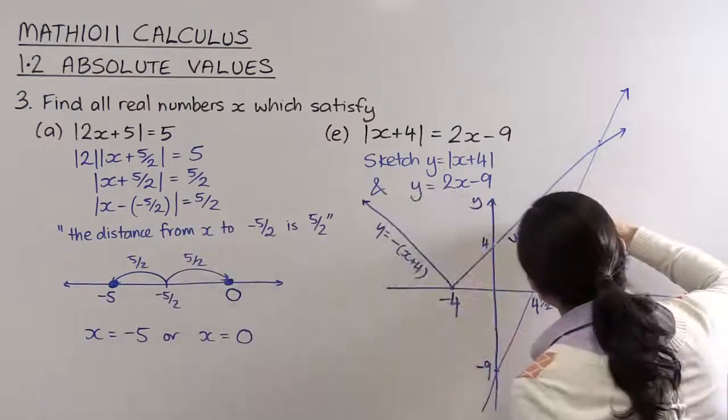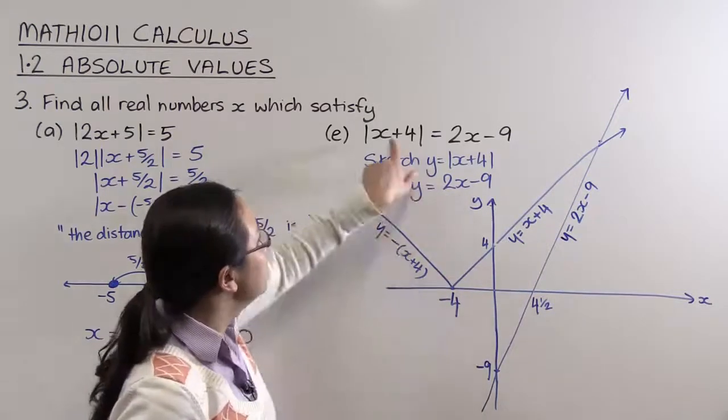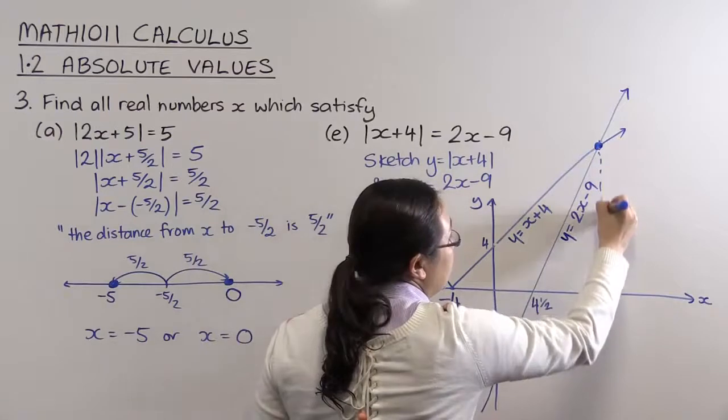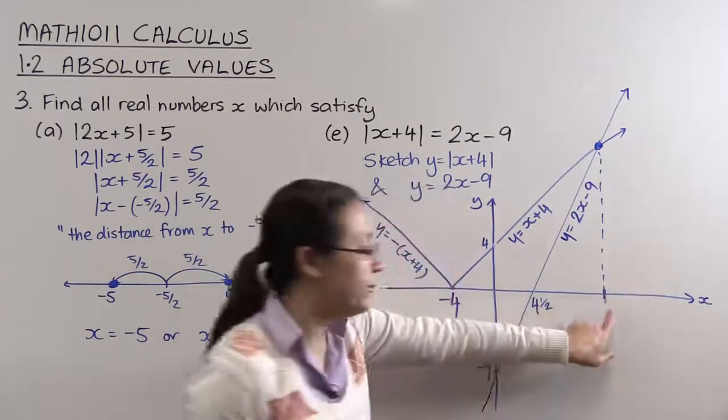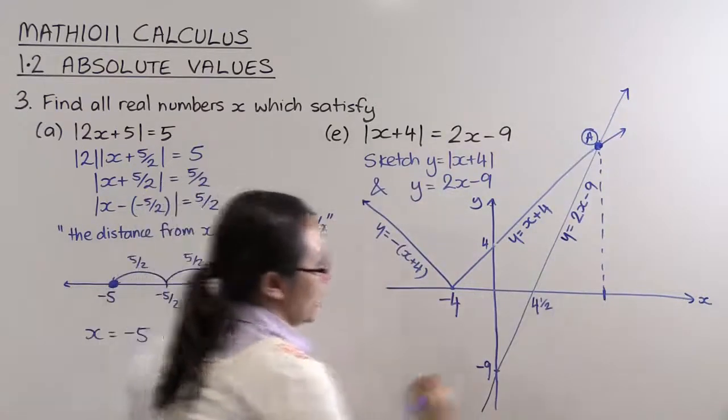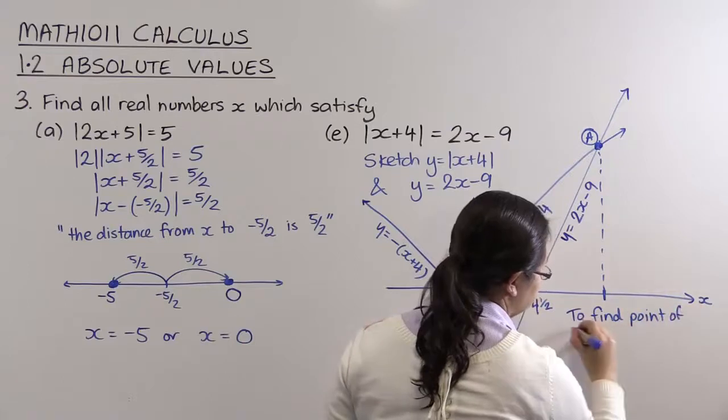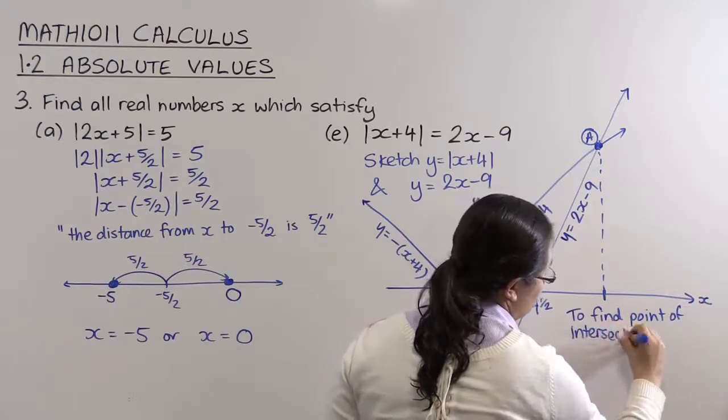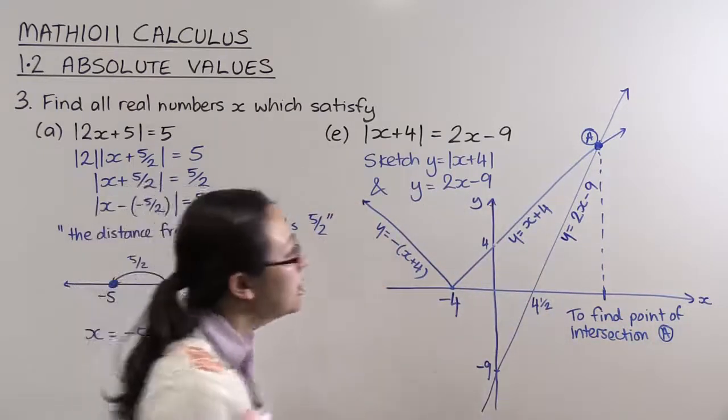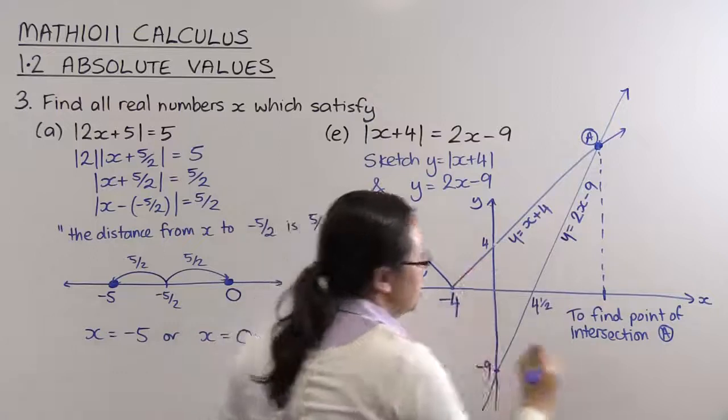So this graph has the equation y equals 2x minus 9. So we can see that the absolute value of x plus 4 equals 2x minus 9 here, right? At this x value here, right? So if we want to find, we want to find this point of intersection, right? So to find the point of intersection that I've labelled up there, A. In fact, we only want the x value of the point of intersection. We're going to solve 2x minus 9 with x plus 4, right? Because that's the equation of that branch of the absolute value.